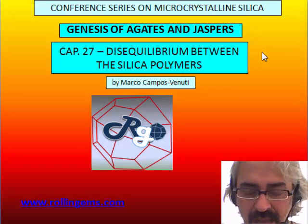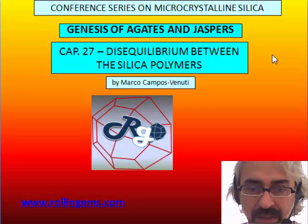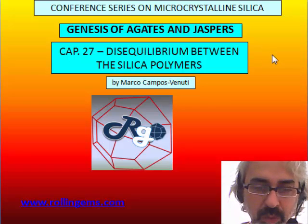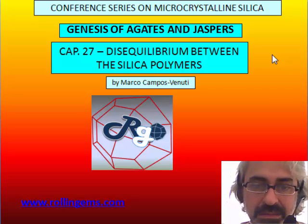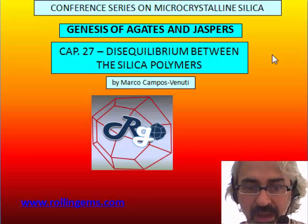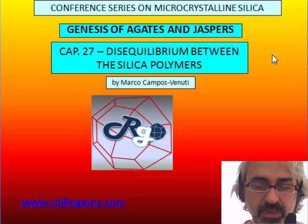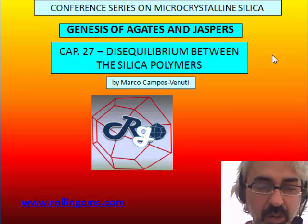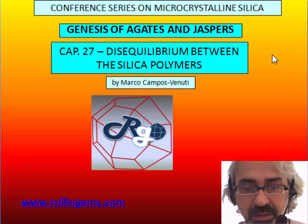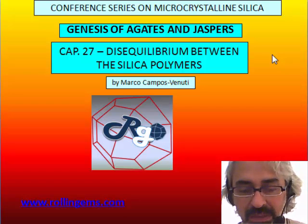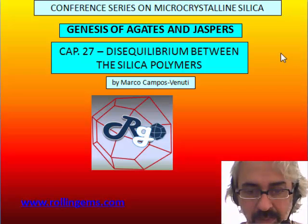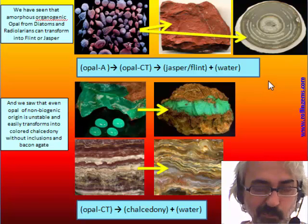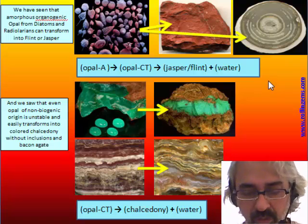In this chapter we analyze some phenomena of disequilibrium between Agate and Jasper. There is some material that has a structure typical of Chalcedony and other structures more typical of Jasper that are usually classified in the group of Jasper-Agate, but its genesis is by secondary process.